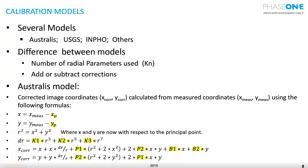Looking at the equations on the lower part of the slide, these are the Australis model equations. We have x measured and y measured on the image, and then xp and yp obtained from calibration. We also have k1, k2, k3, p1, p2, b1, b2 from the calibration. From the measured values and these calibration coefficients, the equations give us the corrected values for x and y.